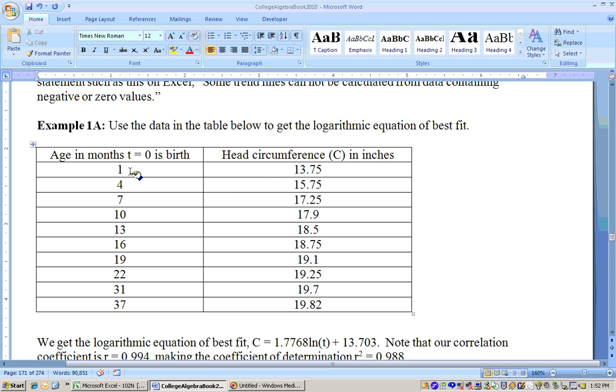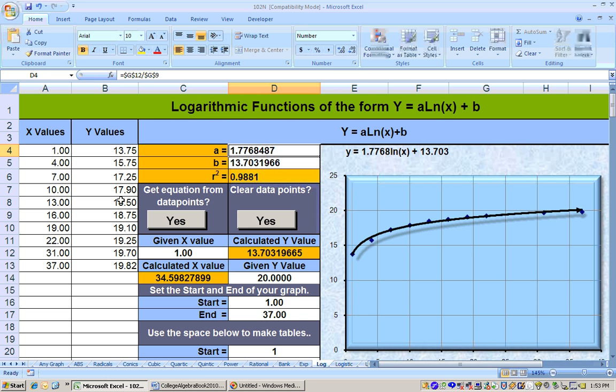What we have now is data points for a child when they're 1 up to 37 months old, and here's their head circumference in inches. Let's go ahead and get the logarithmic equation of best fit for these data points. I copied and pasted special as values into the logarithmic sheet, and then I click the button to find the equation of best fit. The logarithmic equation that best fits these data points is this one right here.